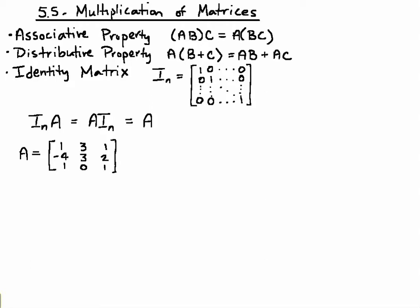You can multiply A times B and then multiply that product by C, or you can multiply B times C and multiply that product by A. You will get the same matrix.